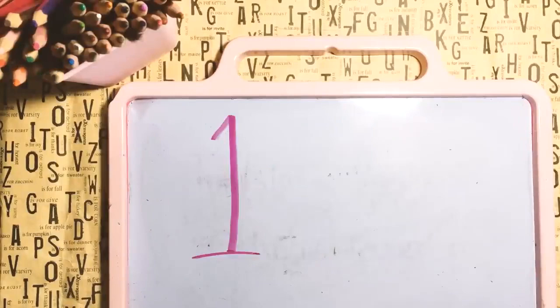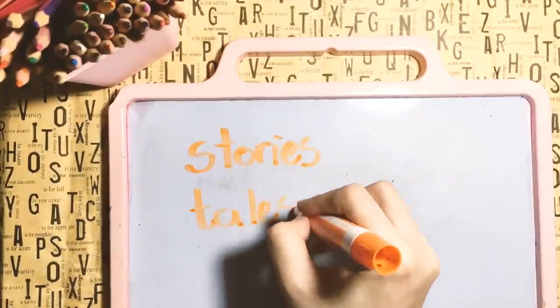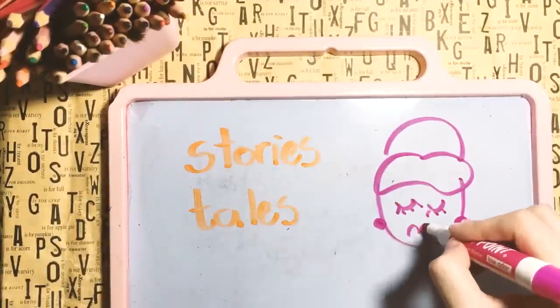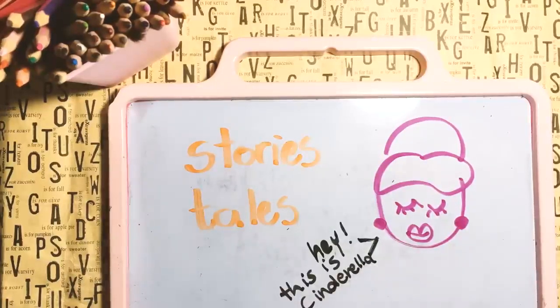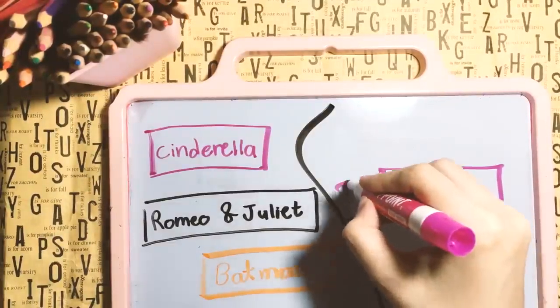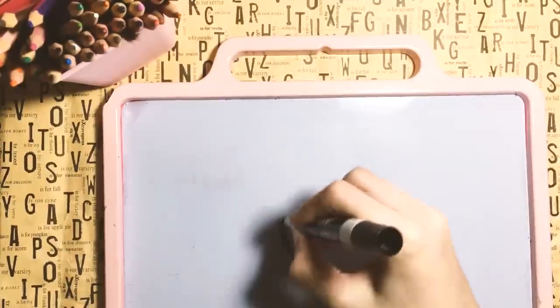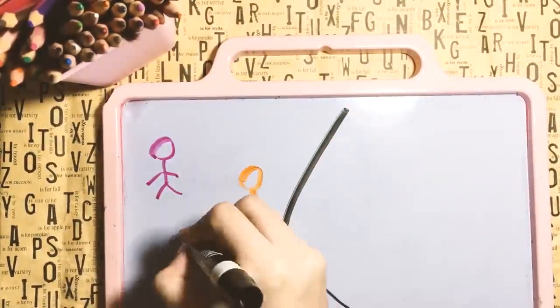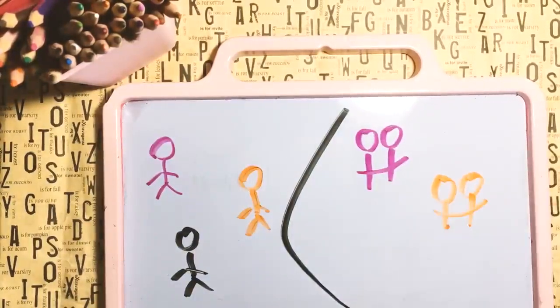The first activity is Alternate Ending. Pick some famous stories or tales, like the story of Cinderella, Snow White, or any popular fiction. Write the titles on cards, or you can stick to one story for all, up to you, and ask the students to pick one. If you have a small class, then students better work individually, but if not, then divide them into pairs or groups.